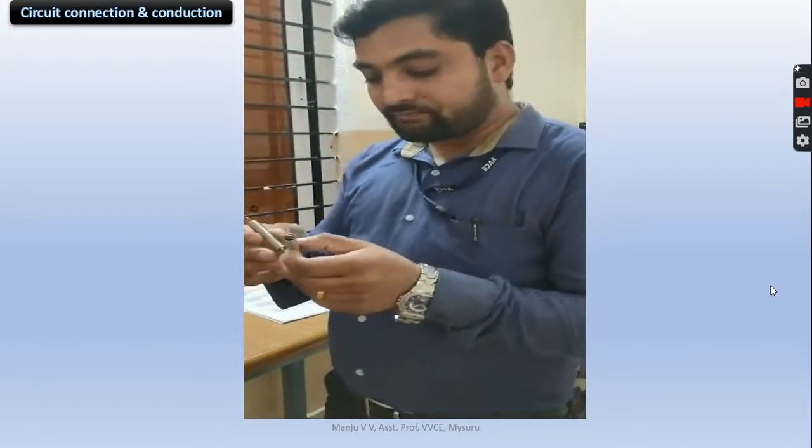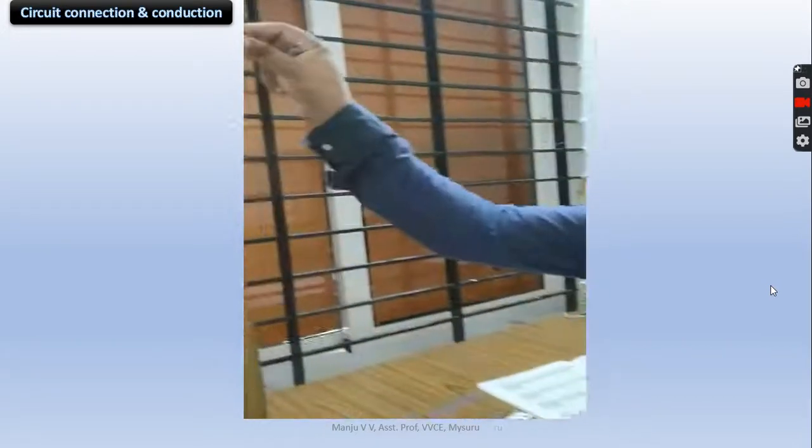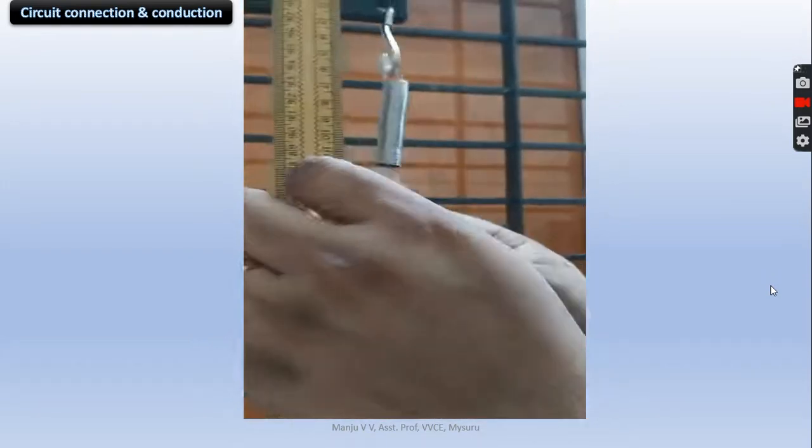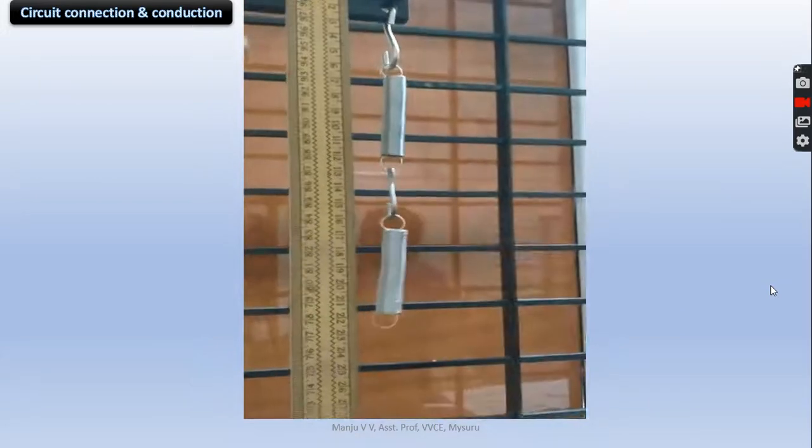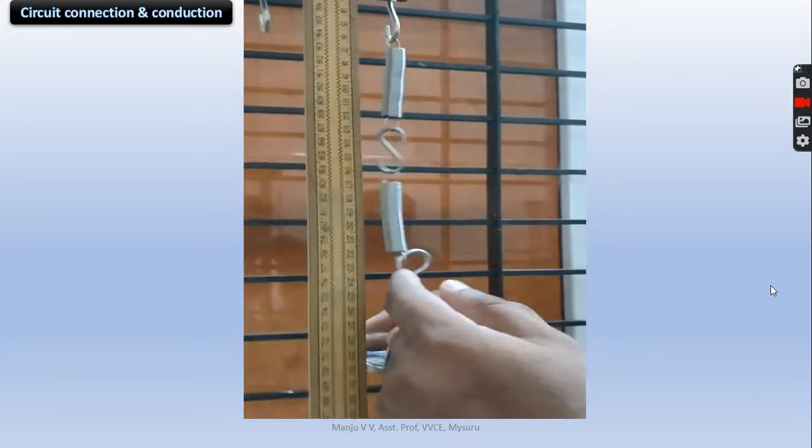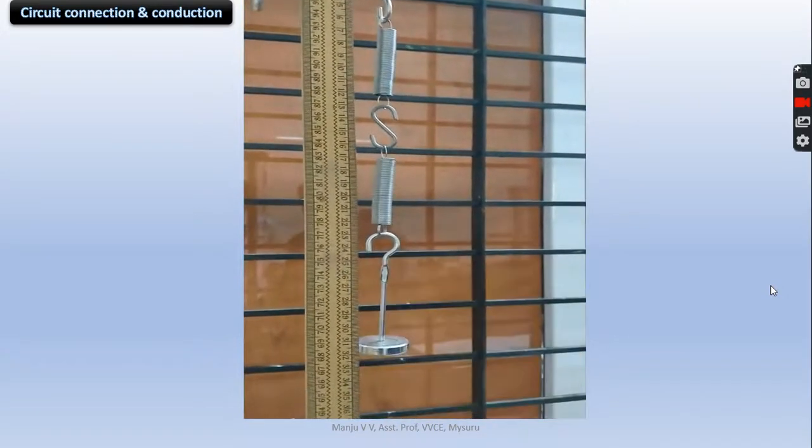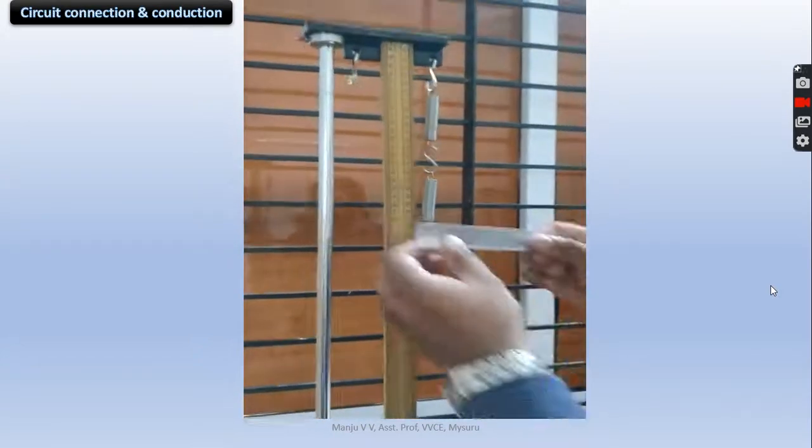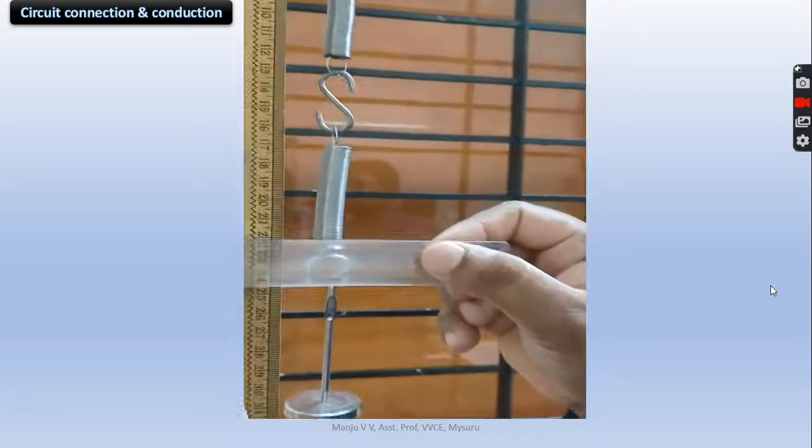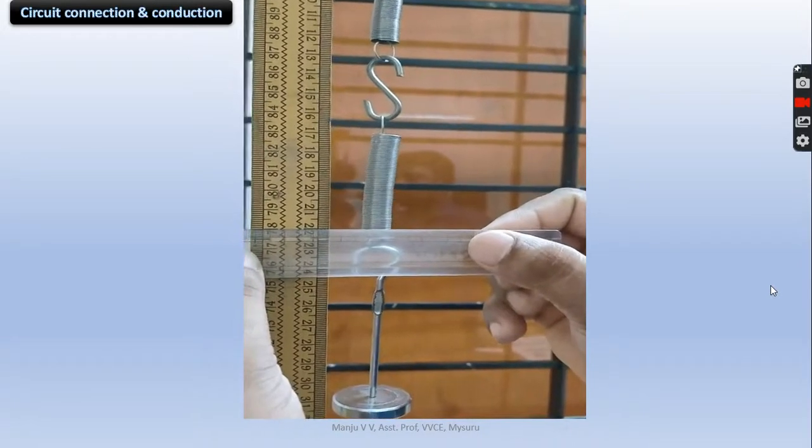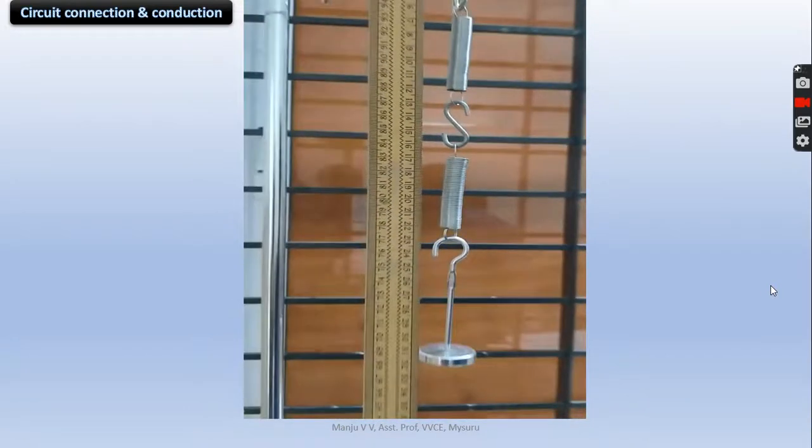To perform a series combination, keep the spring to the holder. Since it is series combination, I need to connect the springs in end-to-end connection. And keep some dead load, and measure whatever extension it has produced using a scale. In my case, it is 22 cm without any weights.